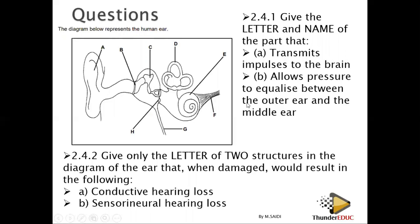Next question: give the letter and name of the part that allows pressure to equalize between the outer ear and the middle ear. This part equalizes pressure on either side of the tympanic membrane. The answer is G — the Eustachian tube.